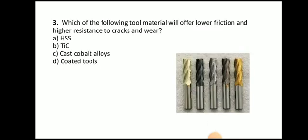Next question: which of the following tool materials will offer lower friction and higher resistance to crack and wear? The answer is coated tool. The coated tool material will offer lower friction and higher resistance to crack and wear. Here you can see the coated tools — they are coated with different materials and provide lower friction as well as higher resistance to crack and wear.